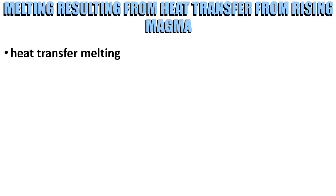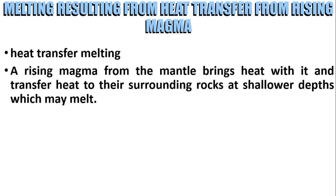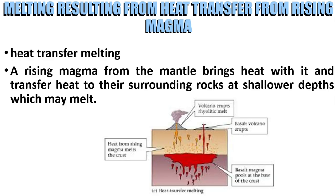Next, melting resulting from heat transfer from rising magma — also called heat transfer melting. A rising magma from the mantle brings heat with it and transfers heat to surrounding rocks at shallower depths, which may melt. Heat from rising magma melts the crust; the volcano erupts. This is called the rhyolite melt. When basalt magma pools at the base of the crust, a basalt volcano erupts.